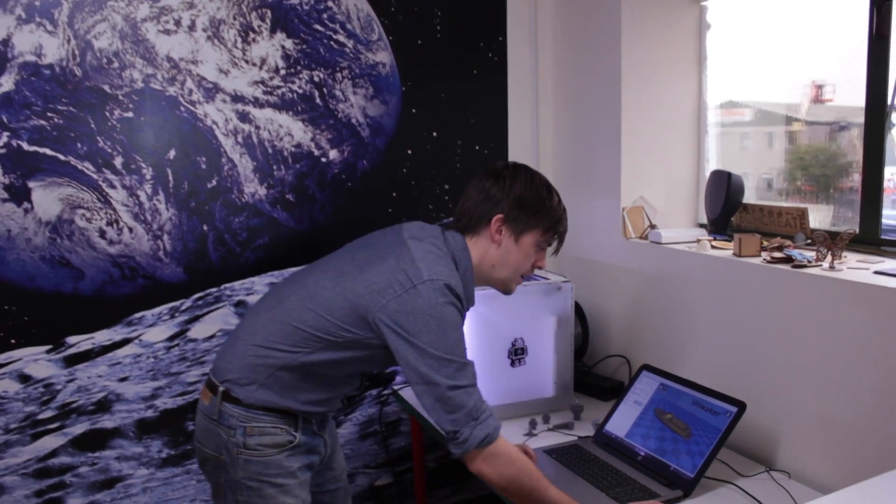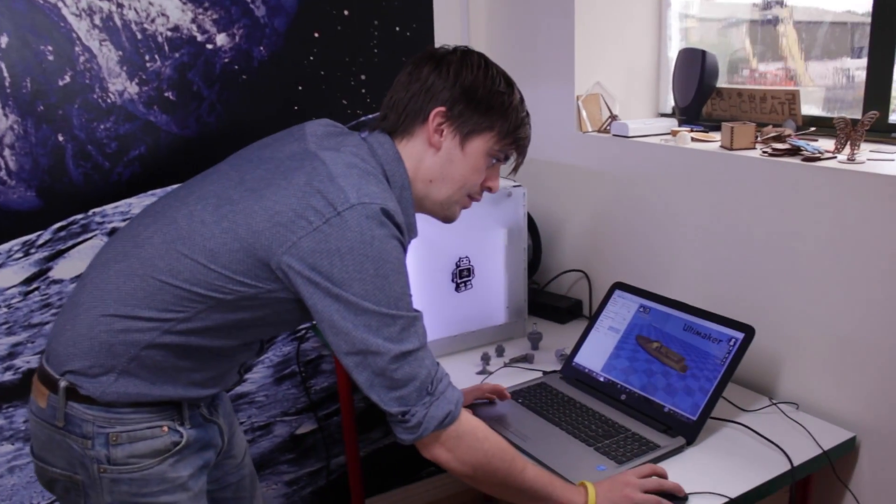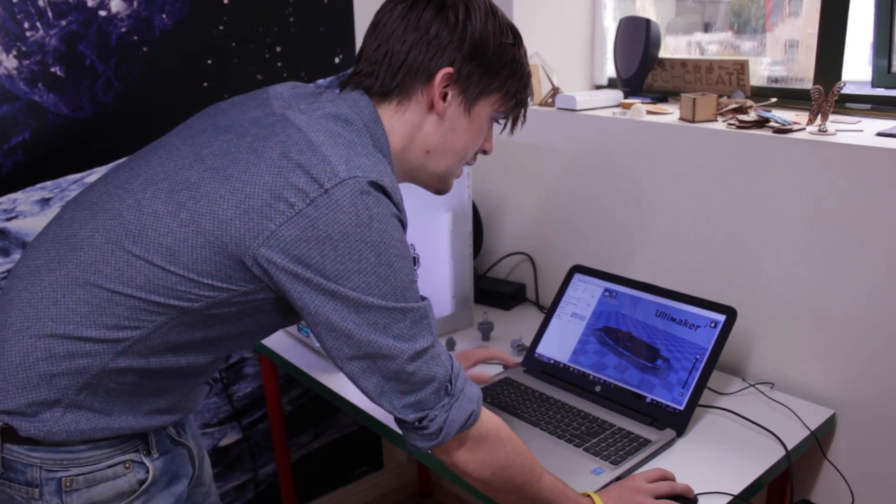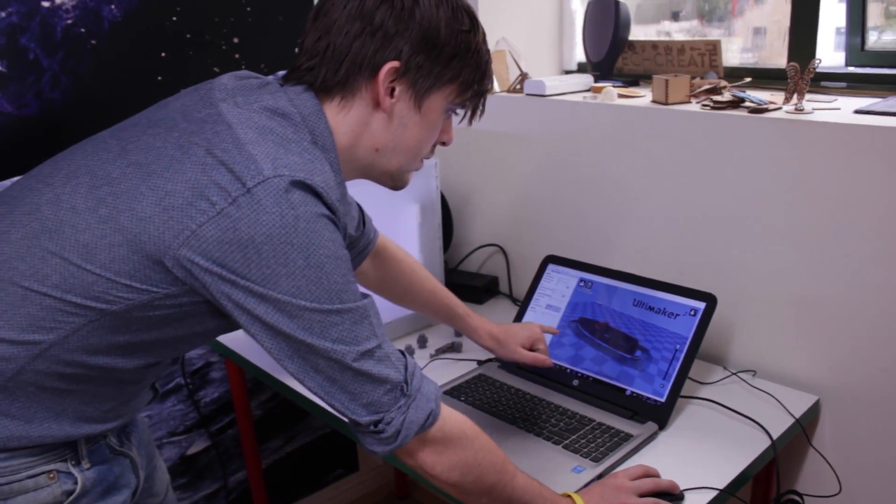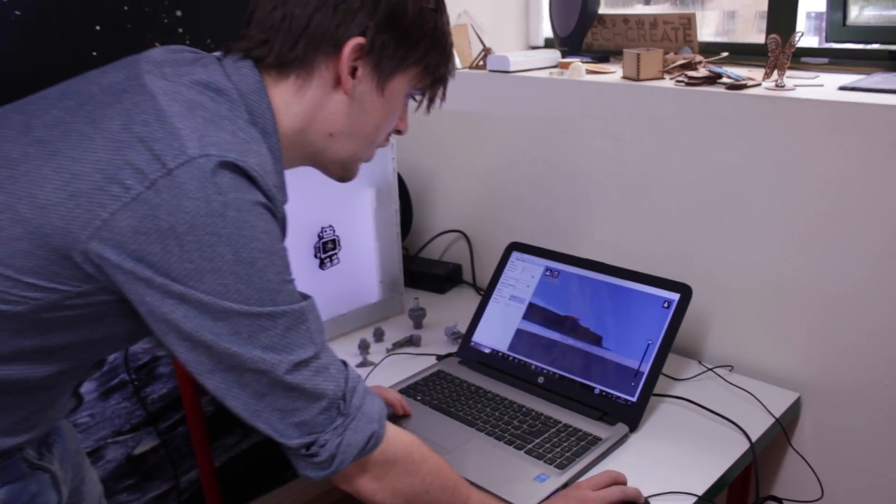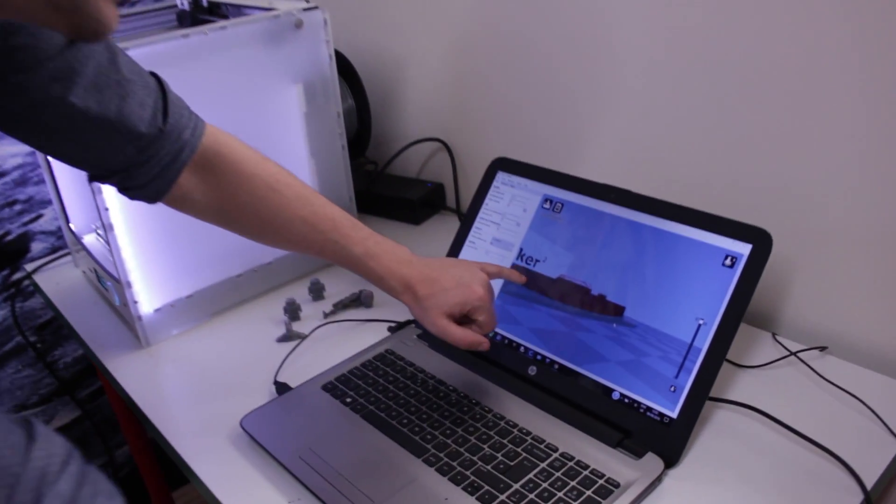So you can see here, it gives you a view mode where it actually shows you the different layers that it's going to slice it off into. So each one of these red lines, you can kind of see there, each one of these is in there.